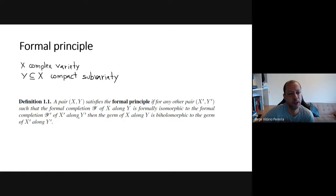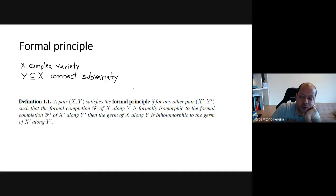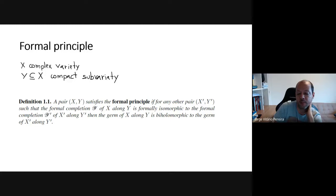So what's this formal principle? It's a concept introduced by Gawart, and it's about compact subvarieties of complex varieties. We take a pair of a complex variety X and a compact subvariety Y, and we say that this pair satisfies the formal principle if for any other pair such that the formal completion of X along Y and the formal completion of X-prime along Y-prime are formally equivalent, then these germs are biomorphic.